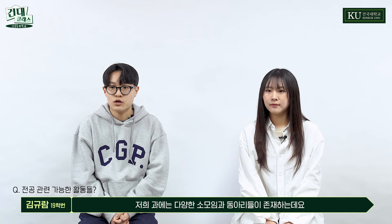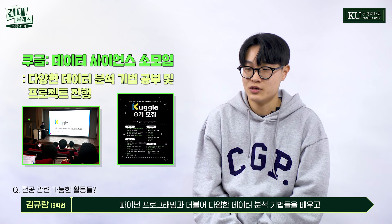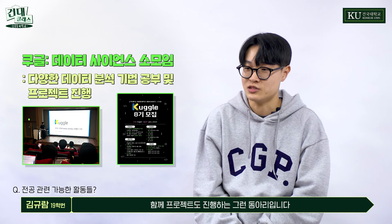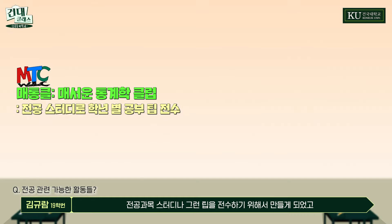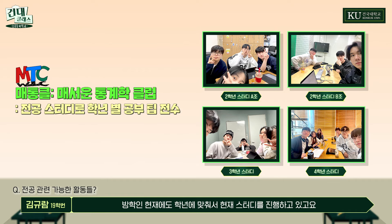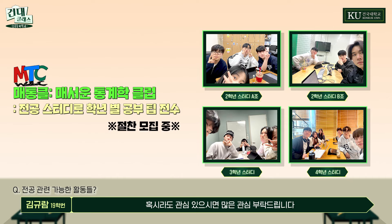저희 과에는 다양한 소모임과 동아리들이 존재하는데요. 대표적인 동아리로 데이터 사이언스 소모임인 구글은 파이썬 프로그래밍과 더불어 다양한 데이터 분석 기법들을 배우고 함께 프로젝트도 진행하는 동아리입니다. 전공 스터디 소모임인 메통클은 매서운 통계학 클럽의 줄임말로, 전공과목 스터디나 팁을 전수하기 위해서 만들었고 방학 현재에도 학년에 맞춰 스터디를 진행하고 있으며 1학기에도 모집을 진행할 예정입니다.